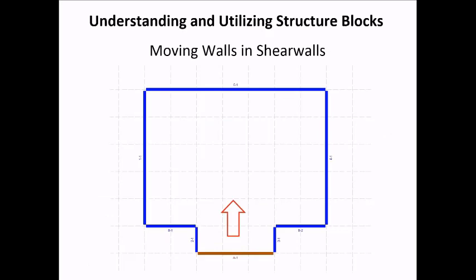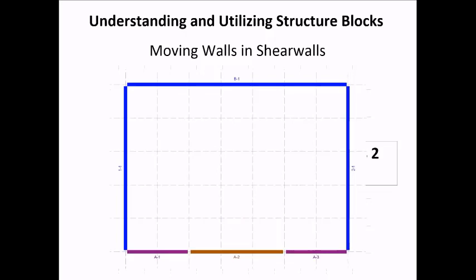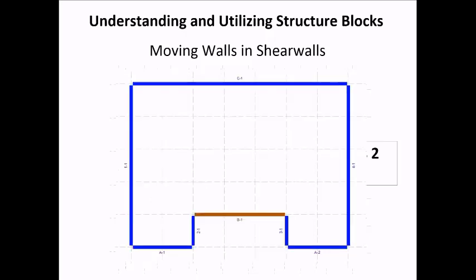Let's go over how to move walls in shear walls. Say I want to move wall A-1 to be on the other side of shear line B. To do this is going to take two steps. First, we need to move line A-1 to be in line with shear line B. Then, move the segment to be on the other side of the shear line. This is one of the rules for moving walls, which you may run into when adjusting your model to match the actual shape of your structure.